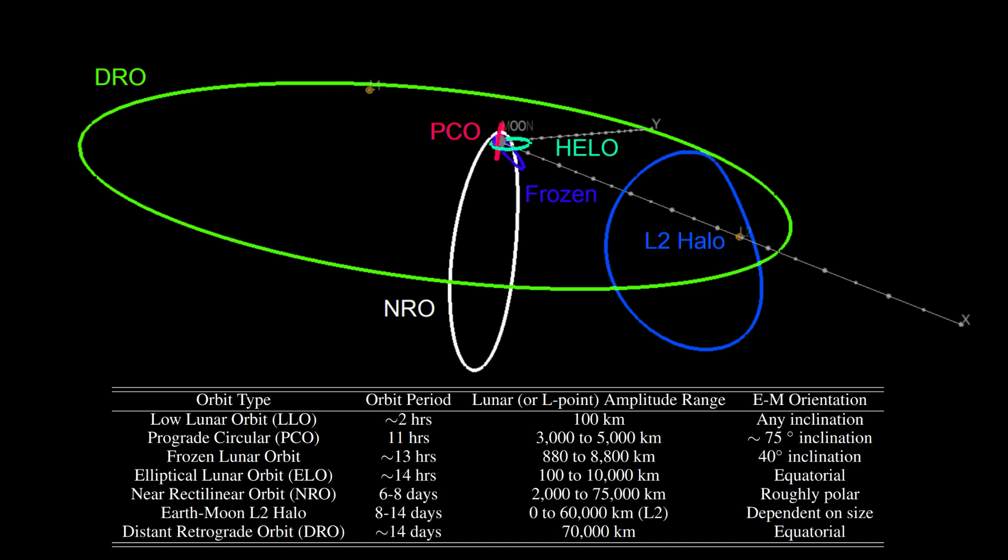They had elliptical orbits, they had a regular halo orbit, a distant retrograde orbit, which is very nice because it's very stable. But the downside is that it took a very long time to get to and from the Moon. And of course, the near-rectilinear orbit or near-rectilinear halo orbit as they are now known.